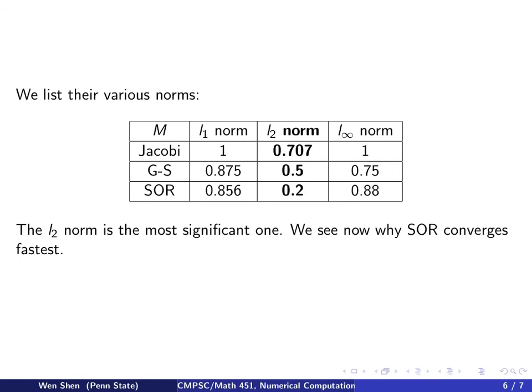So here we put both face, the L2 norm, is because that's the most significant one. It actually tells you the length of the vector in the Cartesian coordinate.